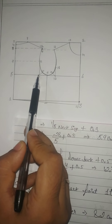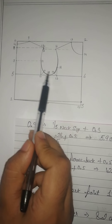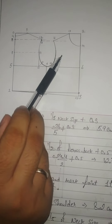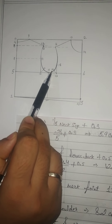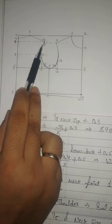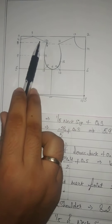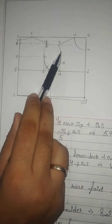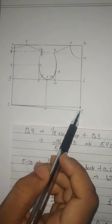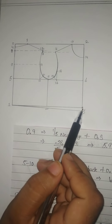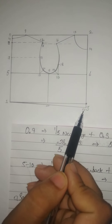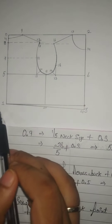Then draw diagonal lines from point number 10 and from point number 17: 10 to 21 is 2 cm and 17 to 22 is 1.75 cm. These are made to give the armhole shaping. With your free hand or French curve, give a smooth armhole shaping. After that, from point number 3, go down 1 cm — this point will be point number 23. Join point 23 with point number 1.